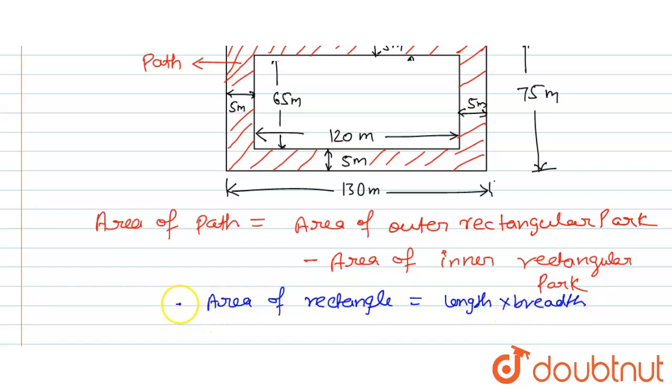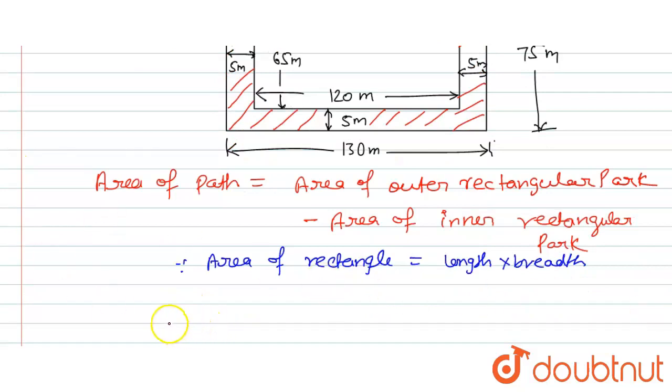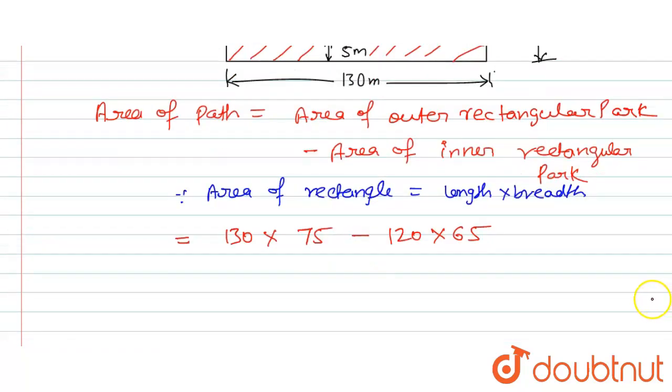Area of outer rectangular part - we will use the outer length, which is 130, and outer breadth, that is 75. We will subtract the inner area of the rectangle part, so length is 120 and breadth is 65. 130 into 75 equals 9750, and 120 into 65 equals 7800. Now 9750 minus 7800 equals 1950. So this is the area of path, and the unit will be meter square.